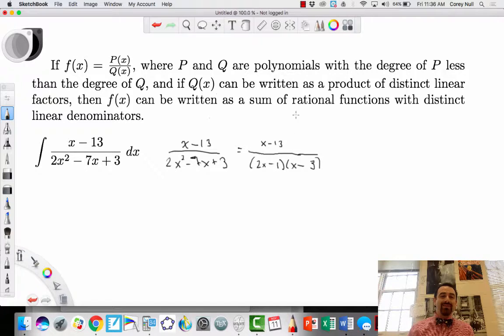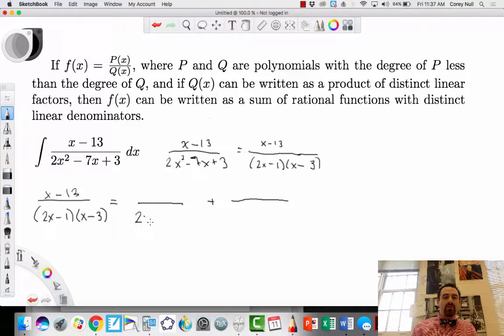So what I can do is, there is a way to write this as two different expressions. So here's what I'm going to write. I'm rewriting x minus 13, I'm rewriting this as the factored form down below. And I can rewrite this as two different fractions, and each fraction has one of the denominators: 2x minus 1 over here, and x minus 3 over here, and some number A, and some number B.